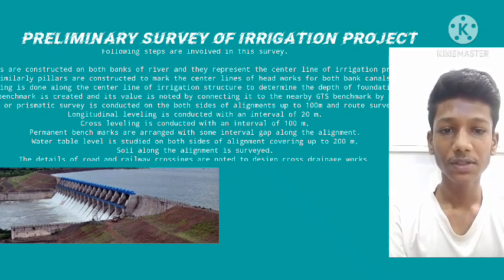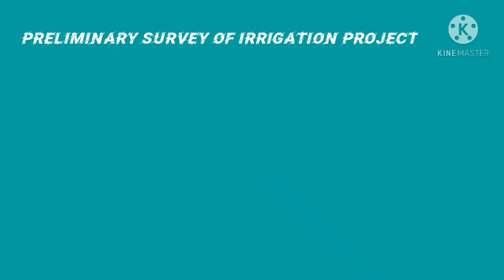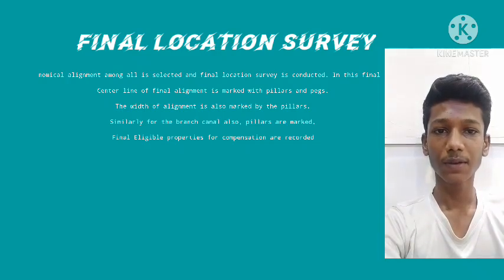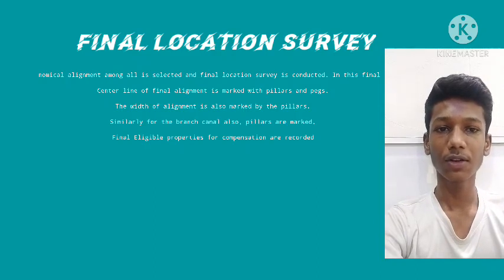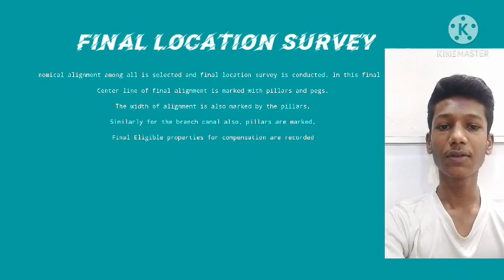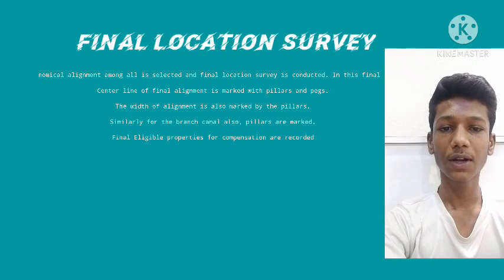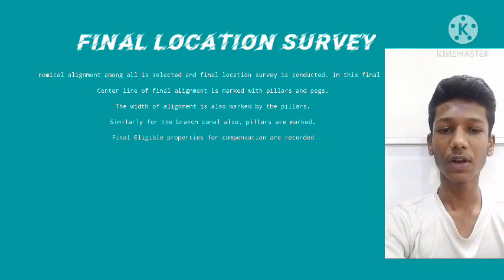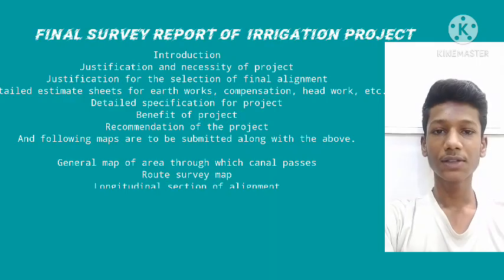Final location survey. After the preliminary survey, the most economical alignment among all candidates is selected and the final location survey is conducted. In this final stage, the center line of the final alignment is marked with pillars and pegs, and the width of the alignment is also marked with pillars. Similarly, for branch canals, pillars are marked and final eligible properties for compensation are recorded.